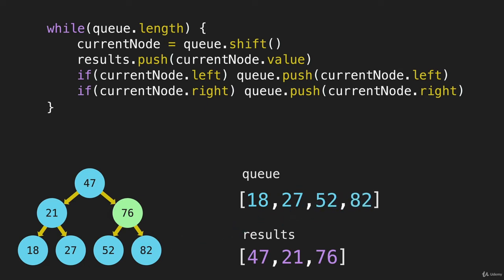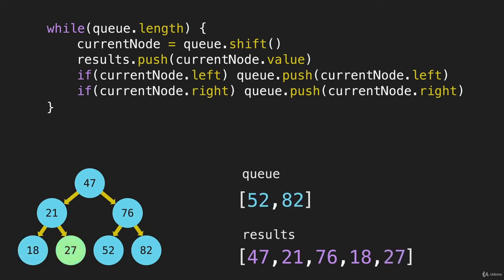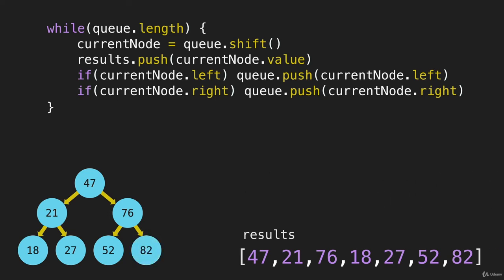It gets really quick from here. When we do the 18 and remove that from the queue and push it onto the results array, there is nothing on the left and nothing on the right. Then we do the same thing for the 27 — nothing on the left or right. Then the 52, then the 82. So now the queue is empty and we stop running the while loop, because it only runs as long as the queue has length. So we'll remove that, and the only step left is to return that results array.